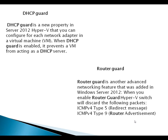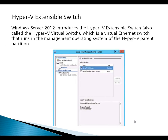The next difference between Server 2008 and Server 2012 is the Hyper-V Extensible Switch. Windows Server 2012 introduces the Hyper-V Extensible Switch, also called the Hyper-V Virtual Switch, which is a virtual ethernet switch that runs in the management operating system of the Hyper-V parent partition. This is also one of the greatest features added with Server 2012 and not available with Server 2008.